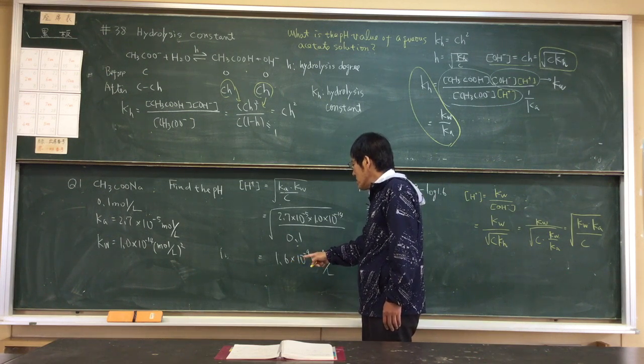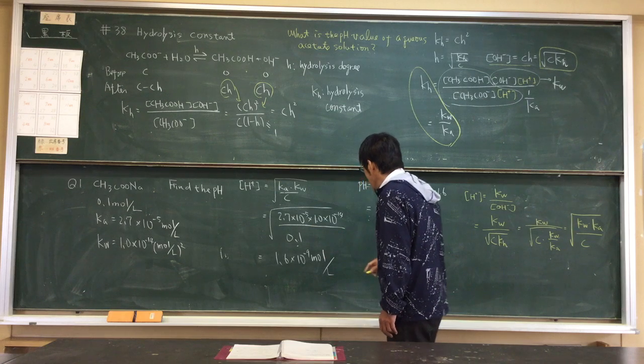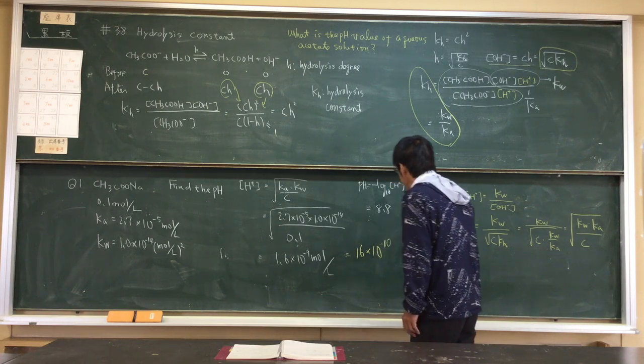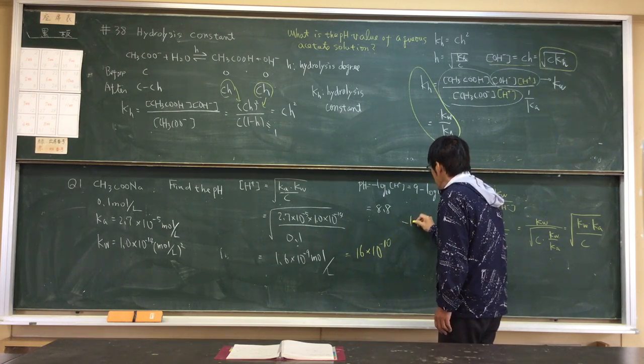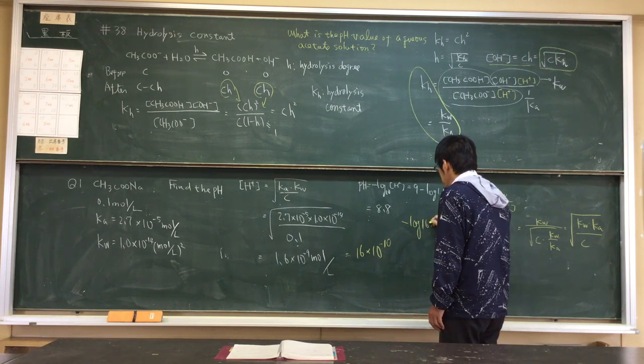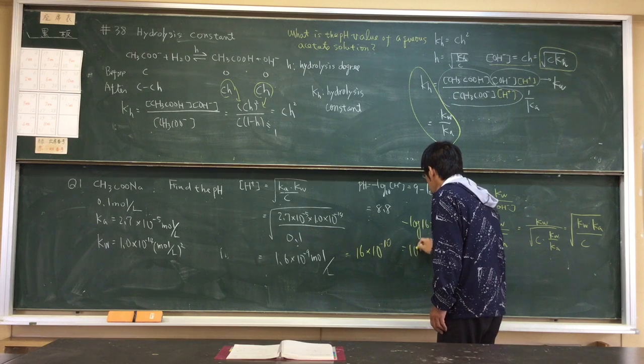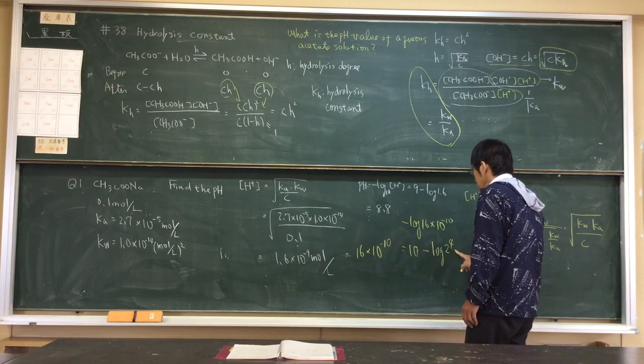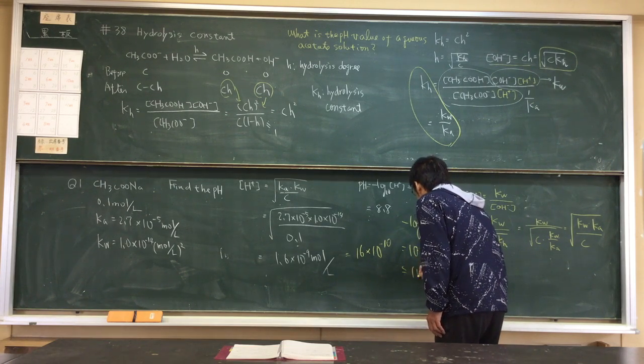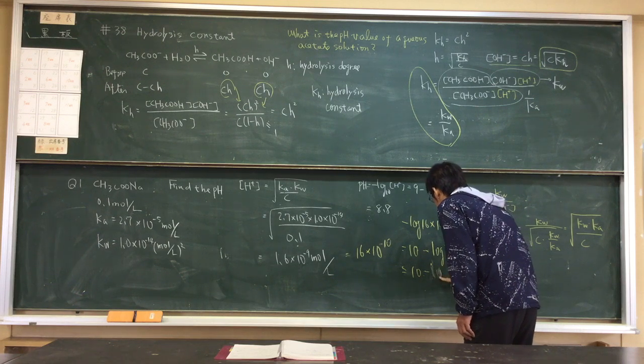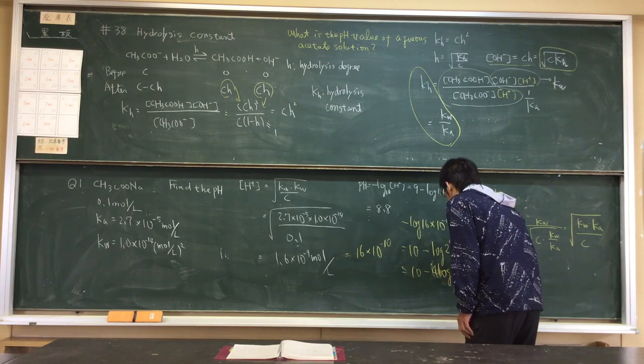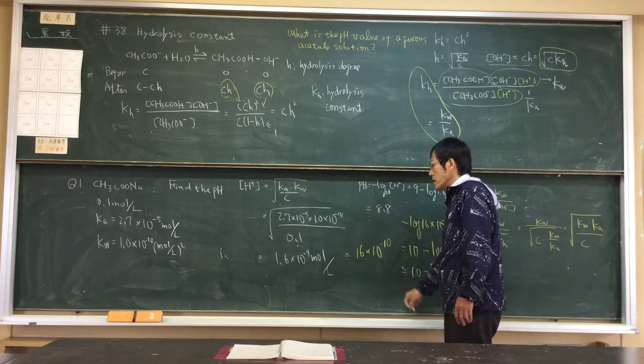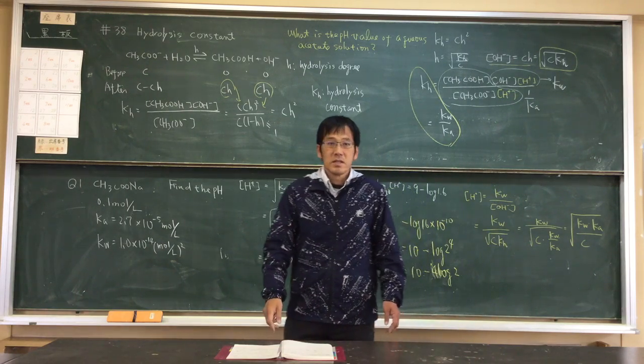This equals 1.6 times 10 to the minus 9. Calculating the pH, we get pH equal to 8.8. That's all for today.